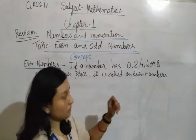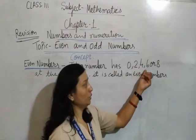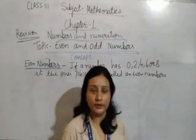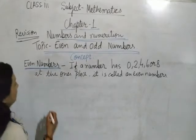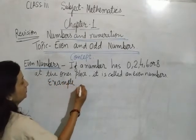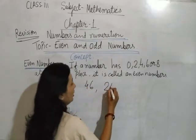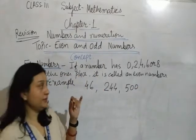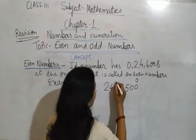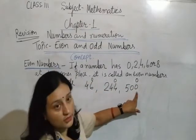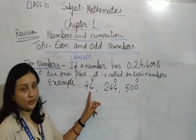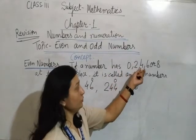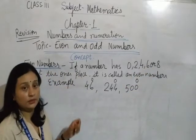Even number: if a number has 0, 2, 4, 6, or 8 at the ones place, it is called an even number. For example, 46, 200, 44, 500. Check the ones place of all these numbers — ones place is 0, ones place is 4, ones place is 6. Since those digits are 0, 2, 4, 6, or 8, these are called even numbers.